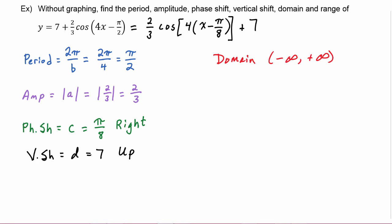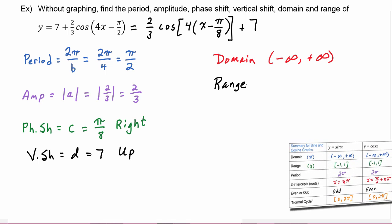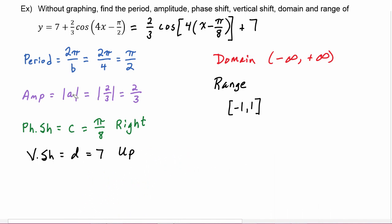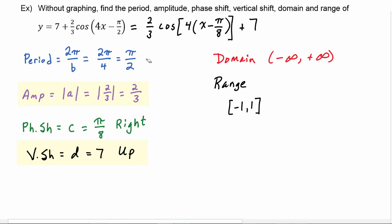And then we can find the range by thinking our way through. We know that an unaltered cosine graph will have a range of negative 1 to 1. Now the y values of the graph are going to be affected by the amplitude and by the vertical shift because those are the only two that are in the y direction. Period and phase shift are in the x direction. So the range will be affected by two of the four values of A, B, C, and D. They're only affected by amplitude and vertical shift.